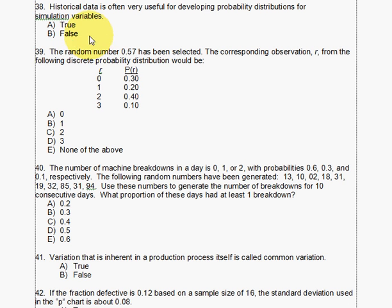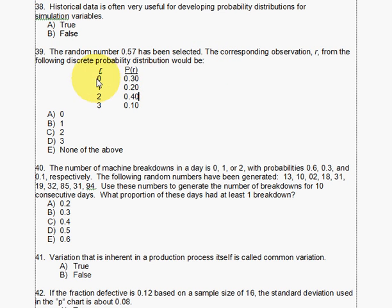Our first question was 39. In this case we have a random number 0.57, which is either from the dice — a 5 and a 7 — or a random number from Excel, and on the test it'll be given to you like this. We have an observation from the following discrete probability: there's a 30% chance of a 0, 20% chance of a 1, 40% chance of a 2, and 10% chance of a 3.